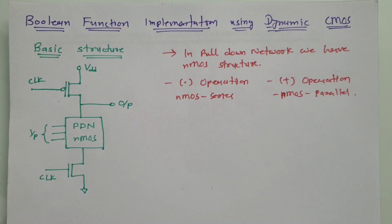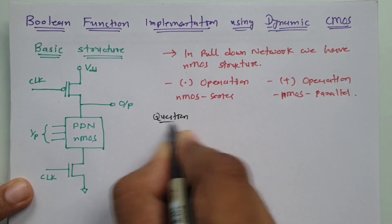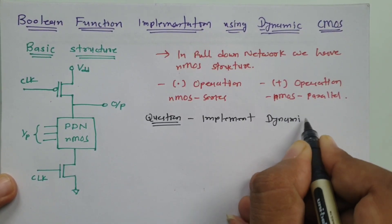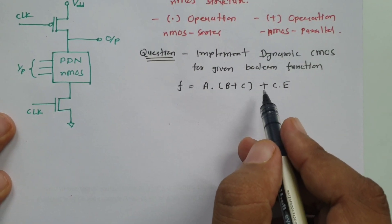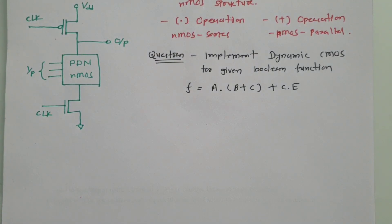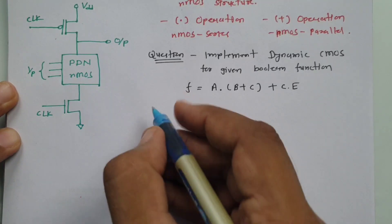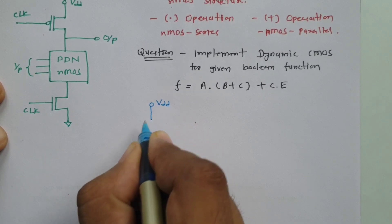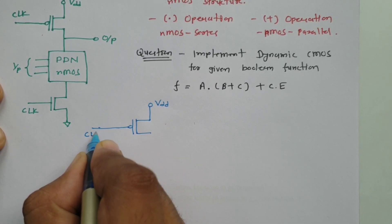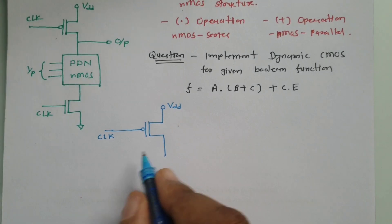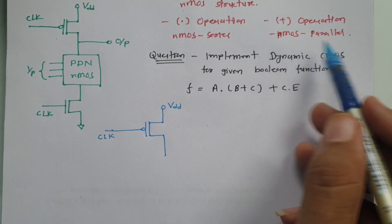Now let us have a question. We are going to implement a Boolean function. The function f equals a·b + c + c·e, and that is what we are going to implement using dynamic CMOS. As explained, in the basic structure we first have a VDD supply, after that we connect a gated clock PMOS, then we have the pull-down network made up of NMOS, where dot operation uses series connection and plus operation uses parallel connection.